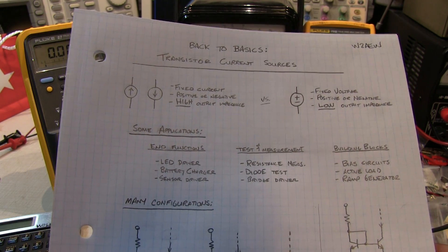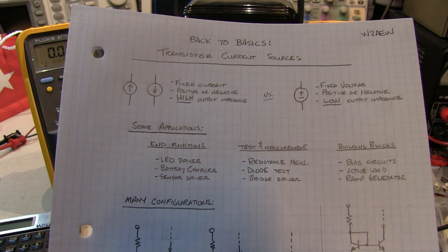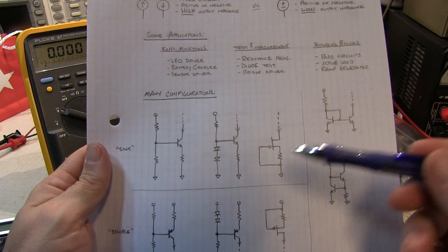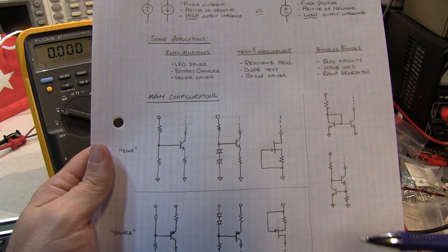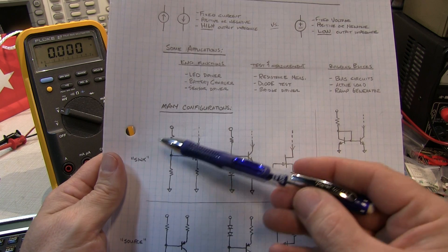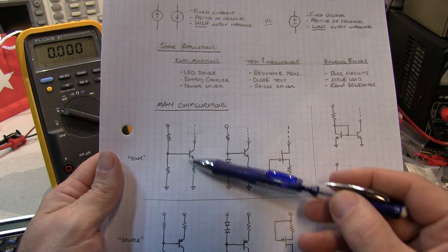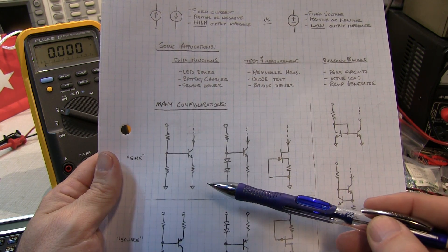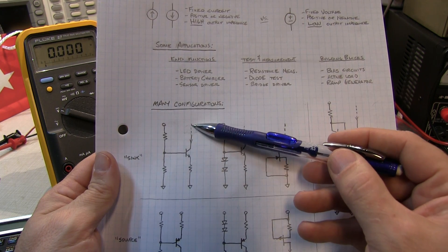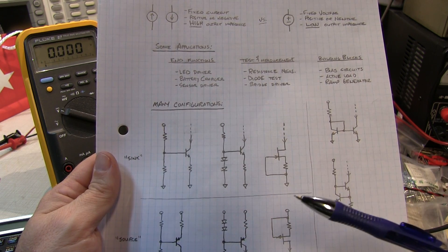Current sources can be built from many different circuits — op-amps and all kinds of active circuitry — but this back-to-basics topic will focus primarily on transistor current sources. One of the simplest forms: just set up a fixed bias on the base of a transistor, which sets up a fixed voltage across the emitter resistor, thus setting up a fixed current in the collector. This is a current sink that is basically constant as long as the supply voltage doesn't change.